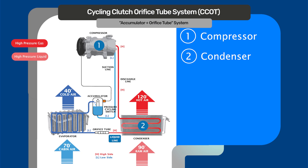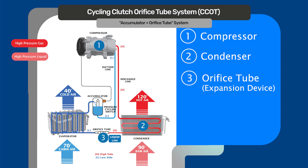In the liquid line, your orifice tube — it could either be at the condenser or at the evaporator, somewhere in between. Your orifice tube is your expansion device. That's where you go from a hot, high pressure liquid to a cold, low pressure liquid.